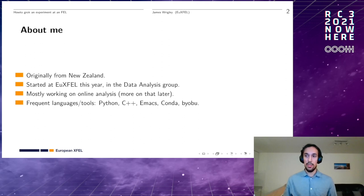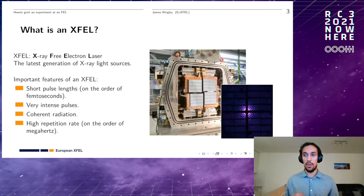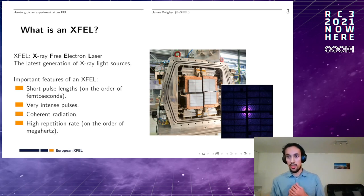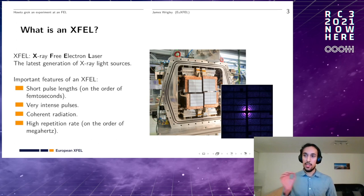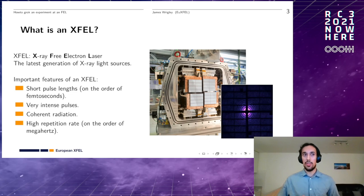Some of you may not be familiar with what an FEL is, so here's a quick introduction. XFEL stands for X-ray Free Electron Laser. It's the latest generation of what are called light sources — basically a massive machine designed to create very short, very intense pulses of X-ray radiation, used to study various physical processes. What sets FELs apart is the very short pulse length, often on the order of femtoseconds, and every pulse is really intense with lots of photons. The radiation is coherent, which is very important for experiments.